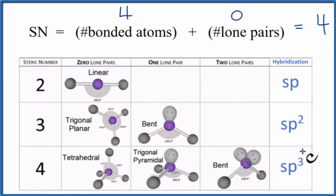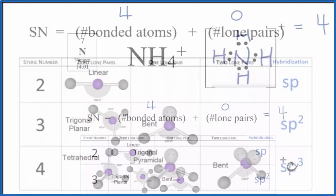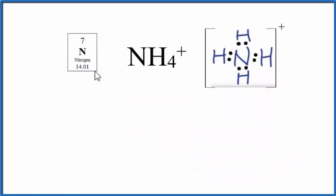Let's talk about why we have this sp3 hybridization though. First, let's write the electron configuration for nitrogen, just regular nitrogen. We have a 1s2, 2s2, and 2p3. So overall we have seven of these electrons.